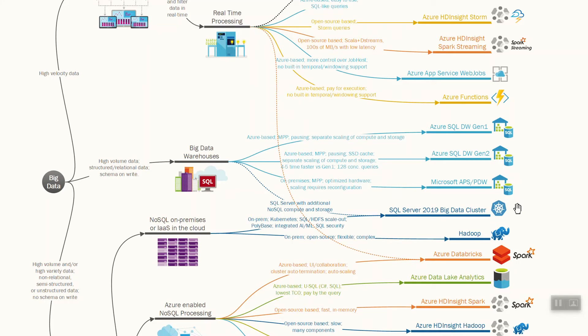Another new solution is SQL Server 2019 Big Data Cluster, which sits in the middle between data warehousing and NoSQL storage on-premises. It includes SQL Server for the data warehouse portion — handling hundreds of terabytes rather than petabytes — but also provides NoSQL storage based on the HDFS file system, plus additional SQL Server nodes for processing big data using the PolyBase Engine, combining data warehousing, NoSQL storage, and NoSQL processing.